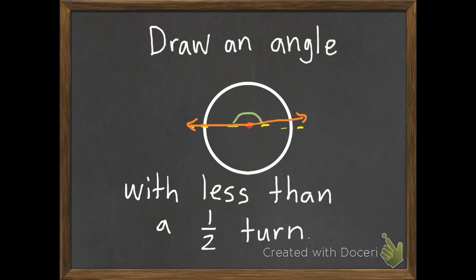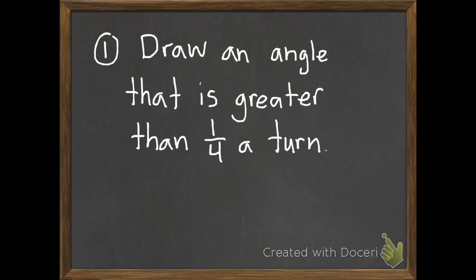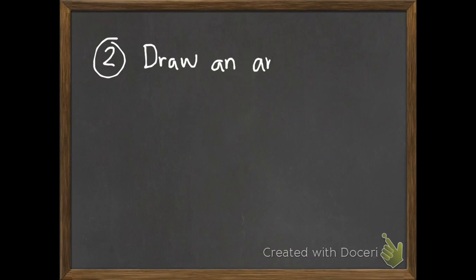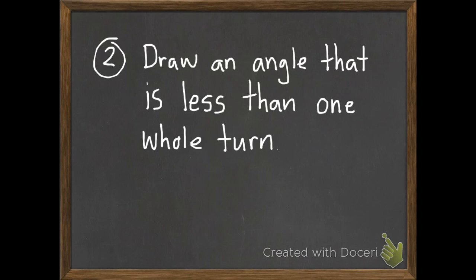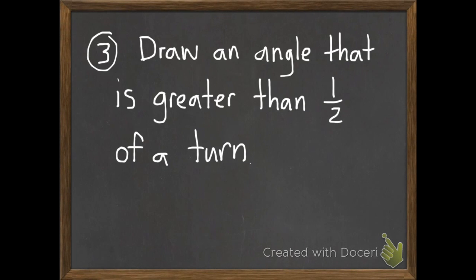I think you're ready for four on your own, and we'll check them tomorrow when you get to class. So number one, draw an angle that is greater than one-fourth a turn. Number two, draw an angle that is less than one-whole turn. Number three, draw an angle that is greater than one-half of a turn.